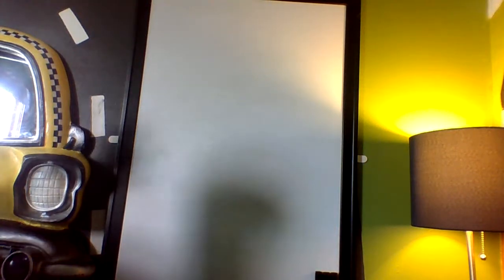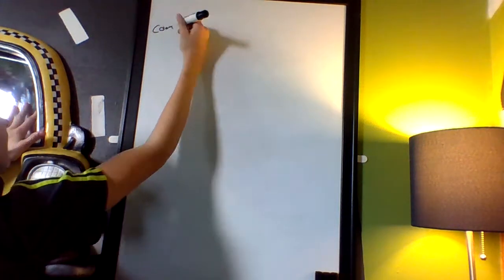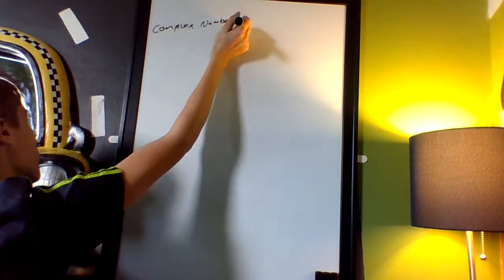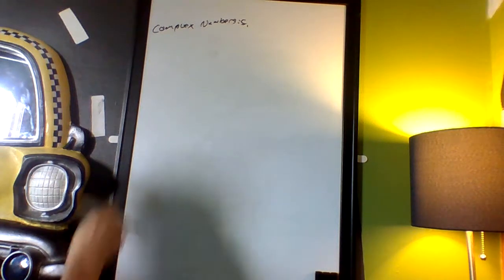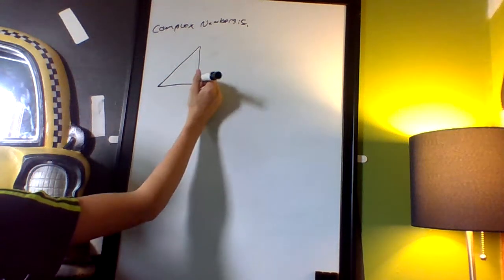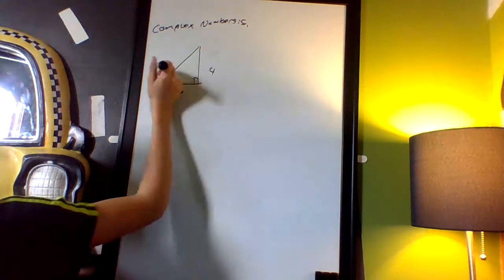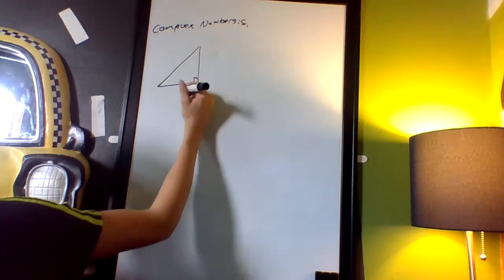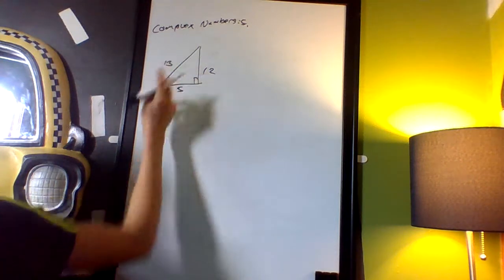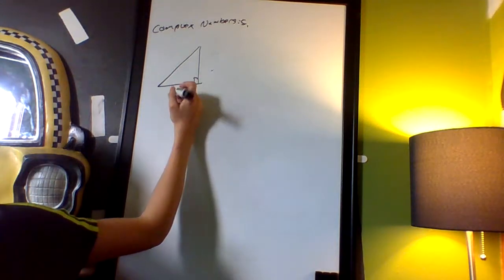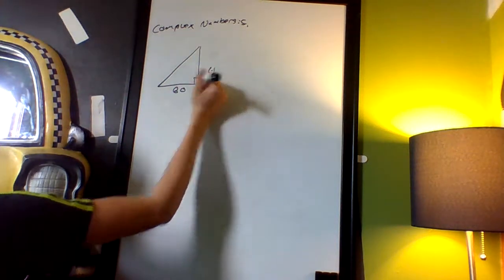Welcome to the final episode of Complex Numbers, Part Five. Let's talk about Pythagorean triples. You probably know some: three, four, five. Another one is five, twelve, thirteen. I know one that a lot of people probably don't — it's going to be sixty, eleven, sixty-one.